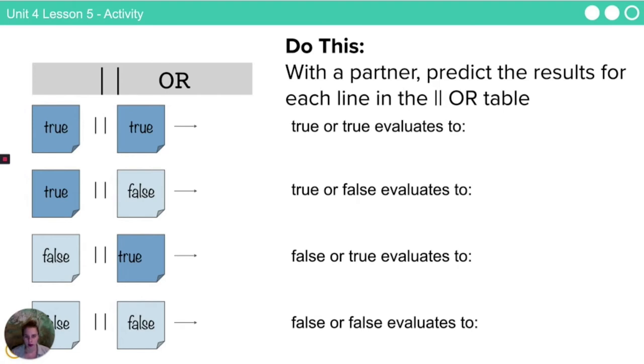Here's another one. I want you to predict the results for each line in the or table. We have a true statement or another true statement. I am holding up my right hand or I am holding up my left hand. A true or a false. I am holding up my right hand or I am not holding up my left hand. Evaluate each of these expressions and then we'll walk through them together.